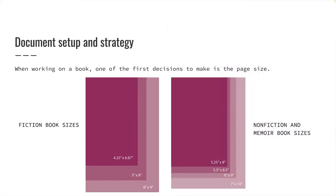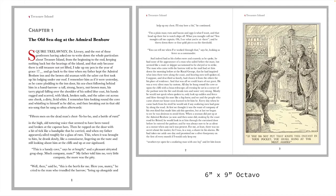One of the first things you need to decide when working on a book is the page size. Of course, your client might predetermine this, but you will find numerous online resources if the decision is up to you. It is important to use standard book sizes if you want your project to print efficiently. There are standard press sheet paper sizes that match standard book sizes. If you deviate from standard sizes, your project may not print efficiently as a 16-page signature. In my example, I am using a 6x9 octavo page with a pleasing 1 to 1.5 aspect ratio, which gives me room to work.